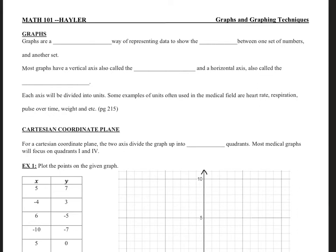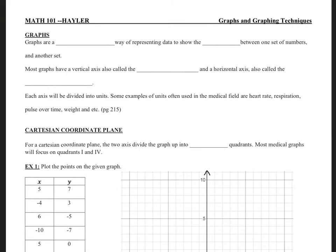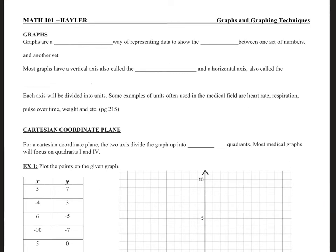Welcome to Graphs and Graphic Techniques for Math 101. This is a basic overview of the kinds of graphs you will generally see in math, as well as a few you might see in a veterinary situation. Graphs are a visual way of representing data to show the relationship between one set of numbers and another. Most graphs have a vertical axis, also called the Y axis, and a horizontal axis, also called the X axis. Each axis will be divided into units; some examples used in the medical field are heart rate, respiration, pulse over time, and weight.